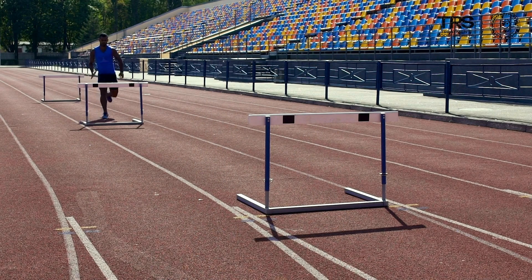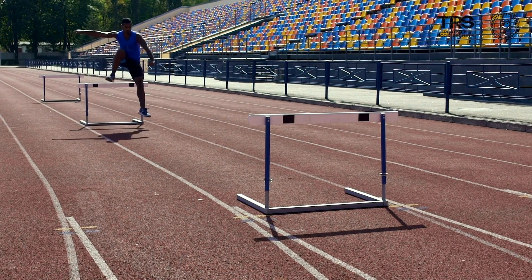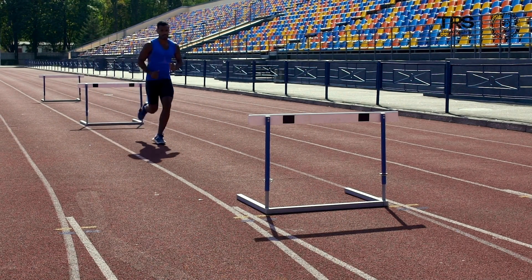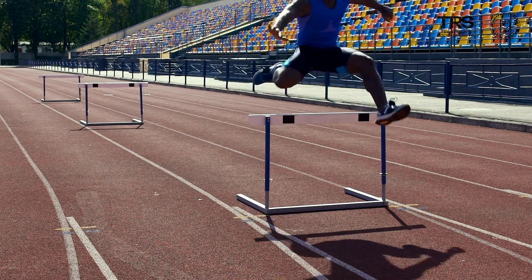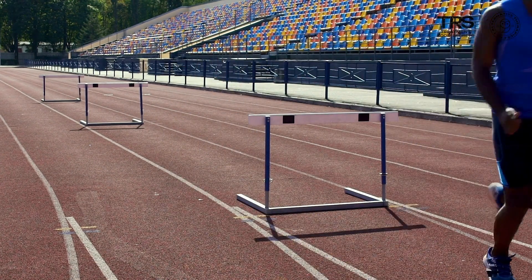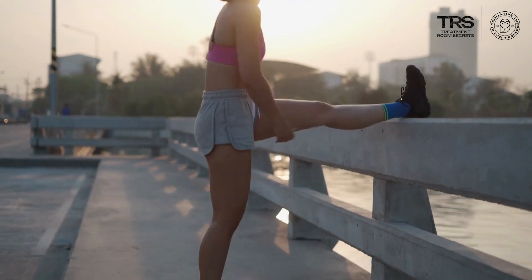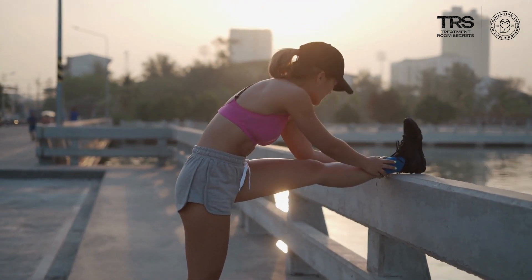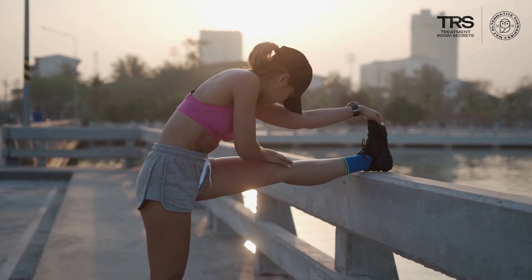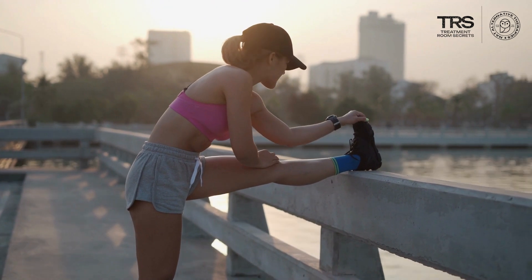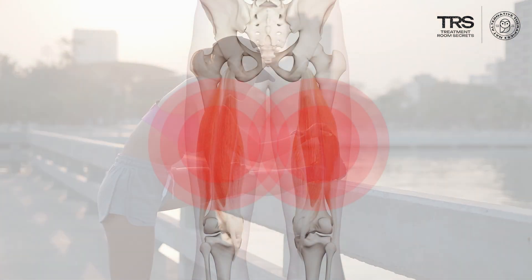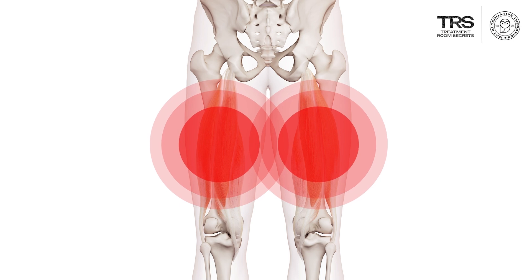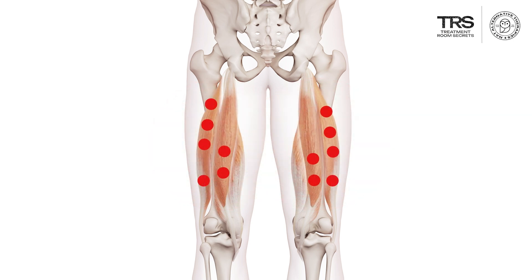Consider someone jumping over hurdles: the front leg that jumps over the hurdle stretches the hamstrings to their full extent, flexing the hip and extending the knee. If you were to fall down, slip, and stretch your leg out in front of you, that will classically cause a hamstring injury. It may injure the tendons, but very often you will get trigger points in the muscles themselves.